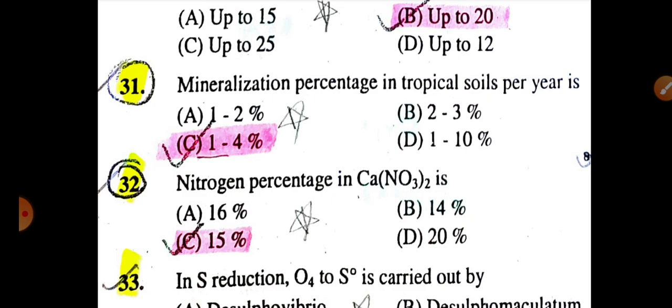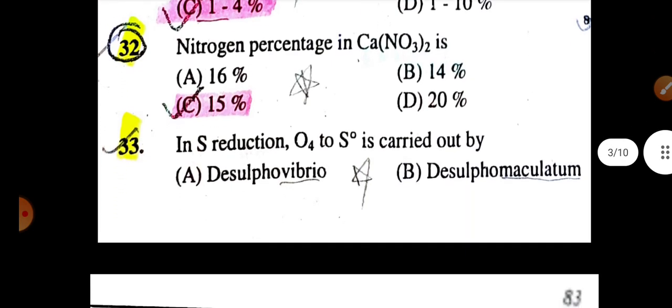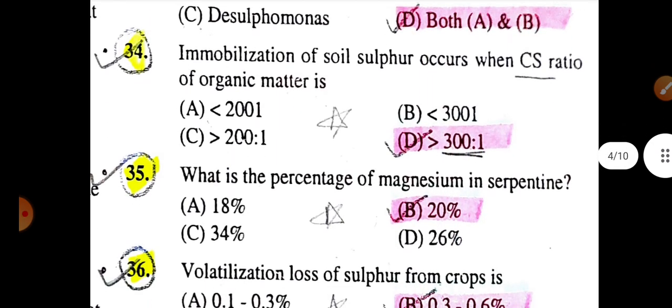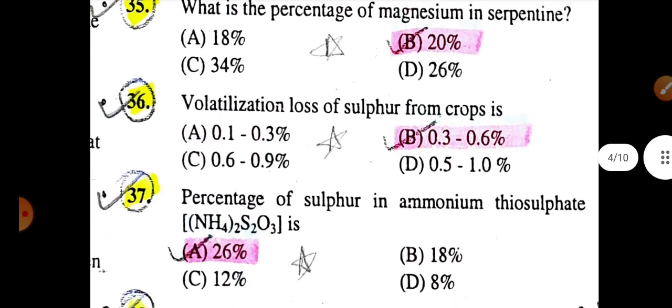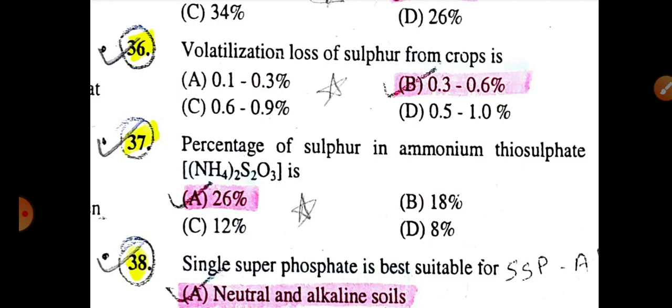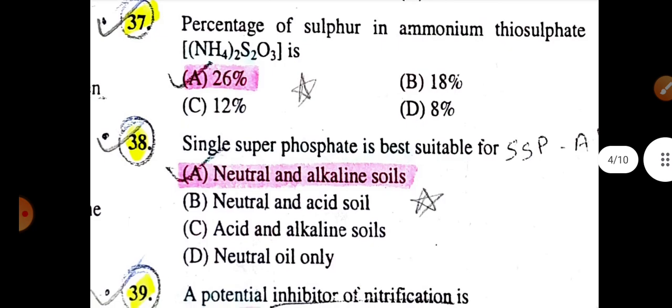Nitrogen percentage in Ca(NO3)2 is 15%. In sulfur reduction, SO4 to S is carried out by both Desulfovibrio and Desulfotomaculum. Immobilization of soil sulfur occurs when C-S ratio of organic matter is more than 400:1. What is the percentage of magnesium in serpentine is 20%. The volatile loss of sulfur from crop is 0.3 to 0.6%. The percentage of sulfur in ammonium thiosulfate is 26%.